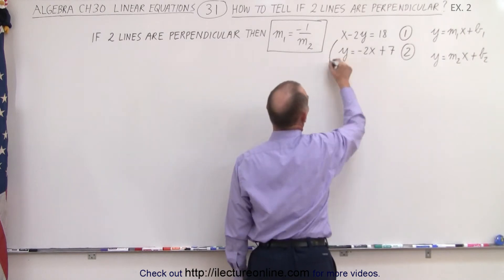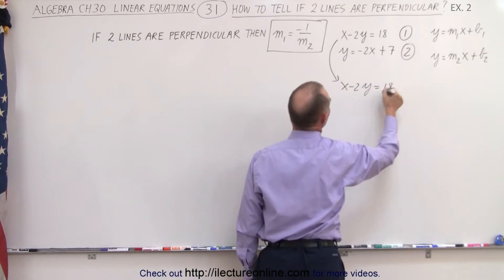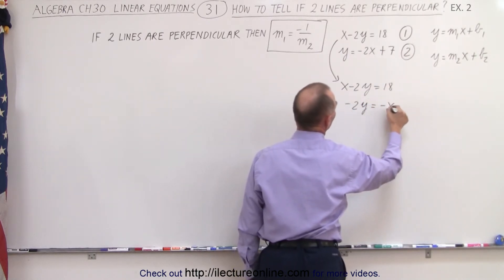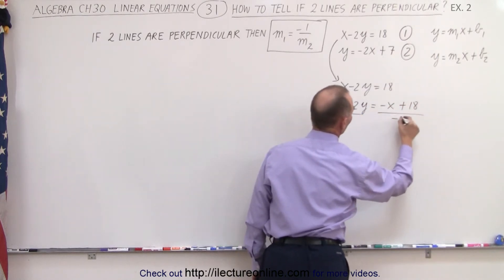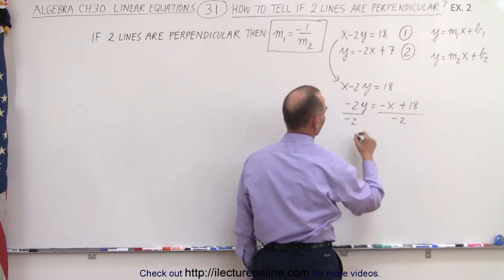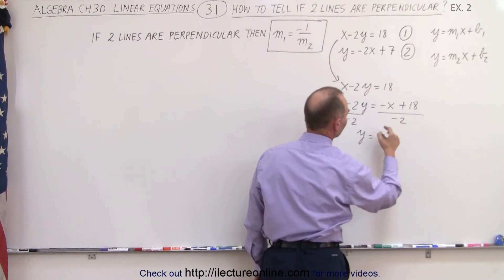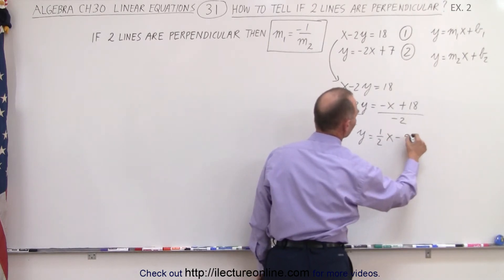So here we have x minus 2y is equal to 18, so we're going to move the x to the other side. So minus 2y is equal to minus x plus 18, and now divide both sides of the equation by negative 2. So you can see that on the left side, we end up with y equals.